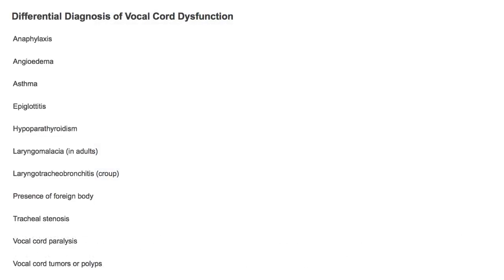What is the differential diagnosis of vocal cord dysfunction? The differential diagnosis will include anaphylaxis or severe allergic reaction, angioedema, asthma, epiglottitis, hypoparathyroidism, laryngomalacia, laryngotracheobronchitis or croup, the presence of a foreign body or foreign body aspiration, tracheal stenosis, vocal cord paralysis, and vocal cord tumors or polyps.